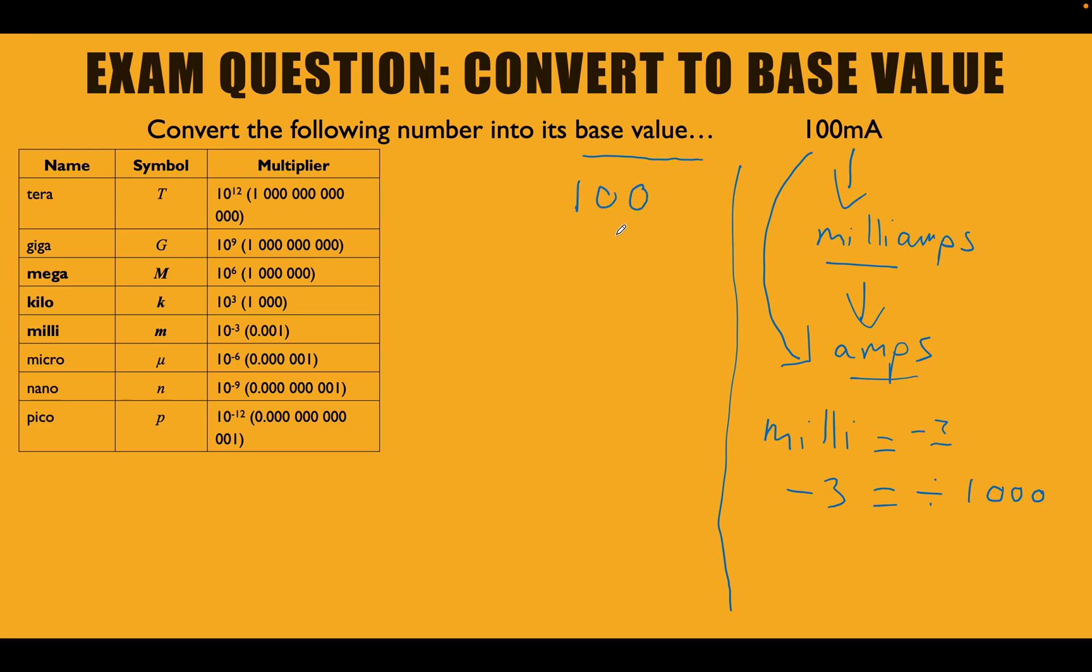If we write this out as 100, so 100 milliamps. We know it's minus 3. So we can do this the manual way. And simply, if we had a decimal point here, which we usually would, we don't write that, but it is there. If we now move this decimal point three times minus 1, 2, 3, our decimal point will be there. So our new value in amps is going to be 0.1 amps. Perfect.